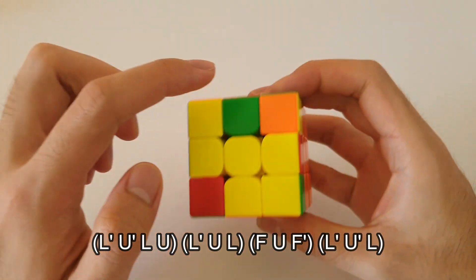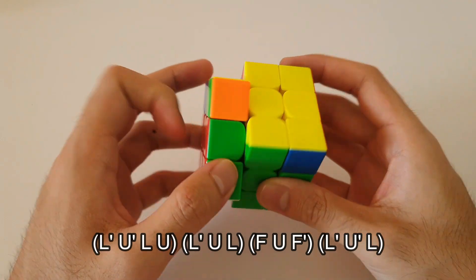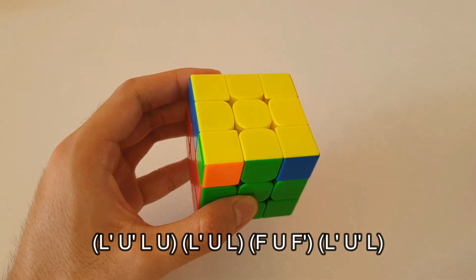And then finally, just insert this F2L pair like you usually would. And that would go like that. And that solves your OLL case.